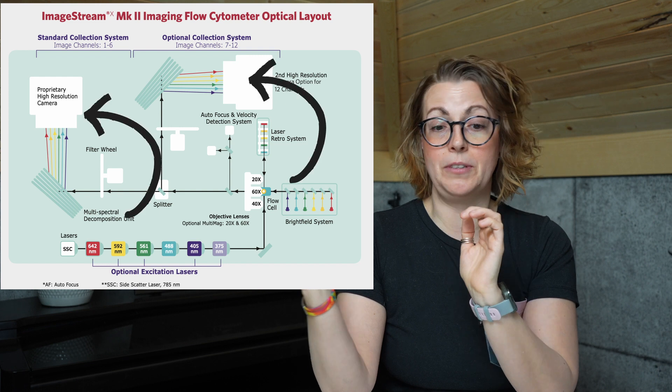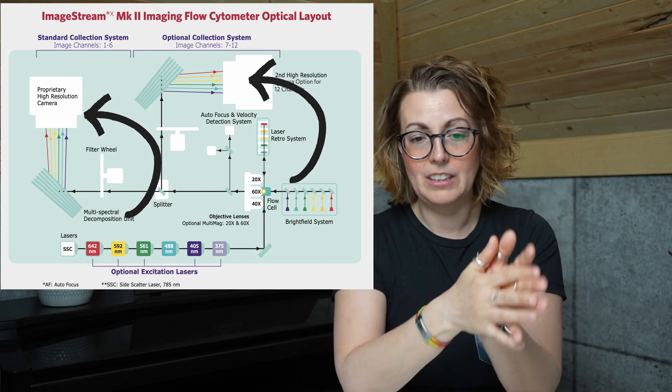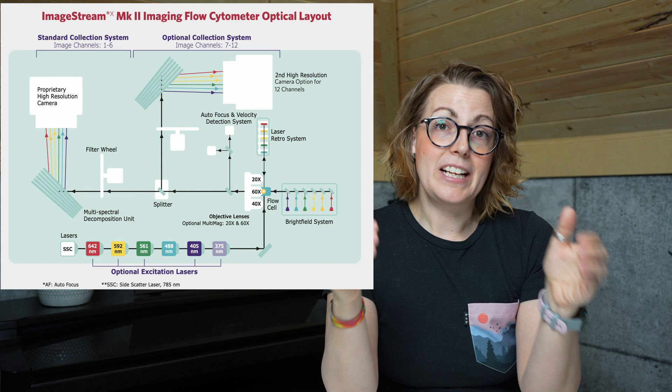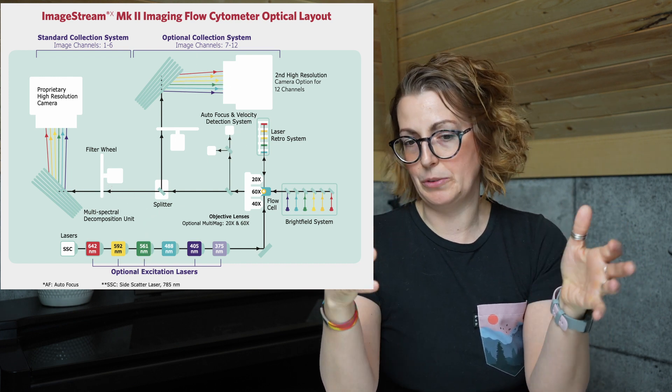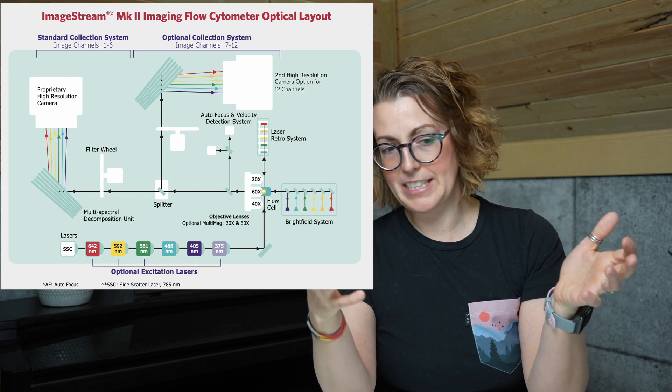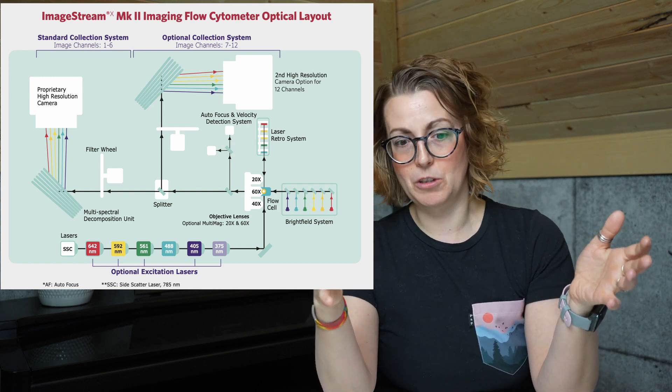These signals are then sent onto a camera or cameras, depending on the setup. In between the magnification and the cameras, you'll find something called the multi-spectral decomposition unit. It's just really a fancy way of saying a series of band pass filters that are close to contiguous, where one ends, the next one starts off. So kind of in between a band pass and a spectral detection system, but with only a few channels. Similar to a standard flow, this is how you split your fluorescence up into different channels.